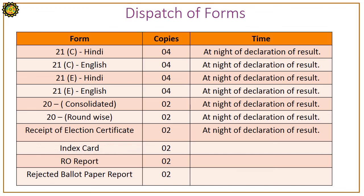Dispatch of different forms: Form 21C (Hindi or local language) – 4 copies on the night of declaration of result; Form 21C (English) – 4 copies on the same night; Form 21E (English and local language) – 4 copies on the same night; Form 20 (consolidated and round-wise) – 2 copies on the same night; receipt of election certificate – 2 copies; index card – 2 copies; RO report – 2 copies; rejected ballot papers – 2 copies.